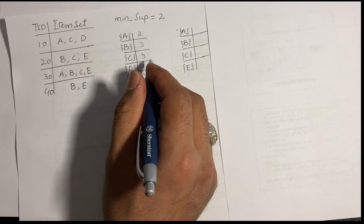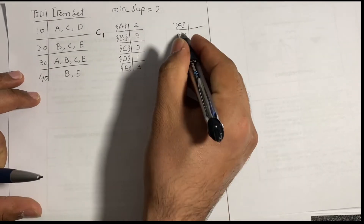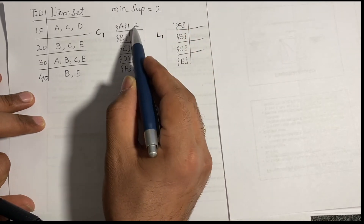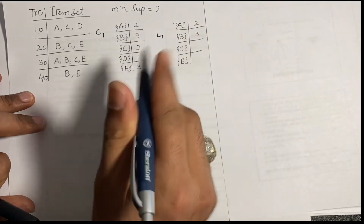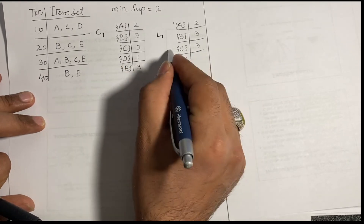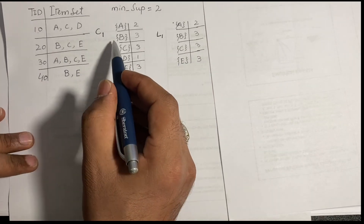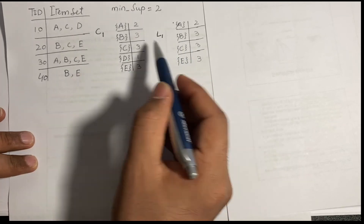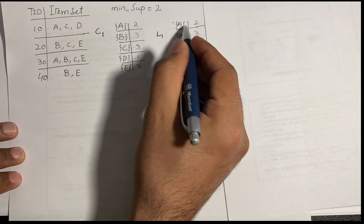This candidate set is called C1, and after pruning it becomes L1. In pruning, we check which items meet the minimum support. A equals 2 — keep it. B equals 3 — keep. C equals 3 — keep. D equals 1, which is less than minimum support, so we remove it. E equals 3 — keep. Now in step three we join the remaining items: AB, AC, AE, BC, BE, and CE.